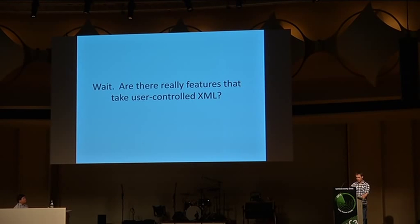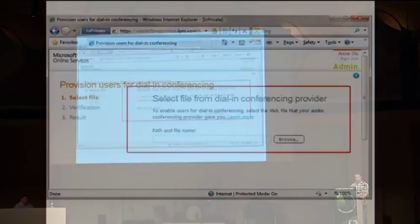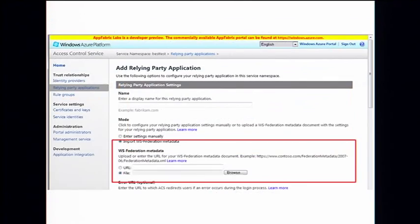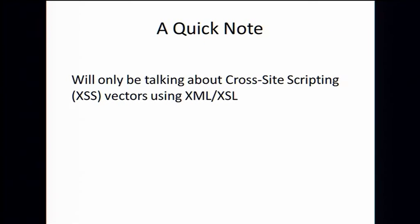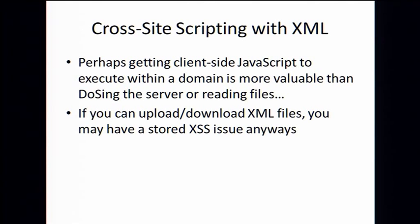So wait — are there really features that take user-controlled XML? Here are two products we support: this is Lync Online, they take XML, and this is ACS which is another product we support. So what happens if your feature parses untrusted XML? There are tons of things that can go wrong. In this talk we'll only be talking about the cross-site scripting vectors using XML and XSL. This is because Microsoft asked us to only talk about the XSS vectors using XML and XSL — which I think is unfortunate, but on the other hand, getting client-side JavaScript to execute is good and maybe that's our end game rather than DoS-ing the server or reading files.